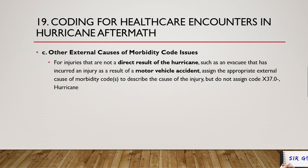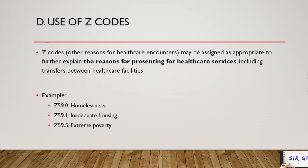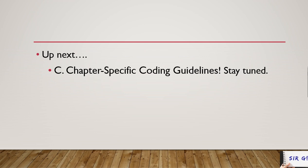The use of Z codes: Z codes represent other reasons for healthcare encounters and may be assigned to further explain the reason for presenting for healthcare services, including transfers between healthcare facilities, homelessness, inadequate housing, and extreme poverty. If there is no condition available yet, you may use Z codes to specify the reason for the patient's visit.